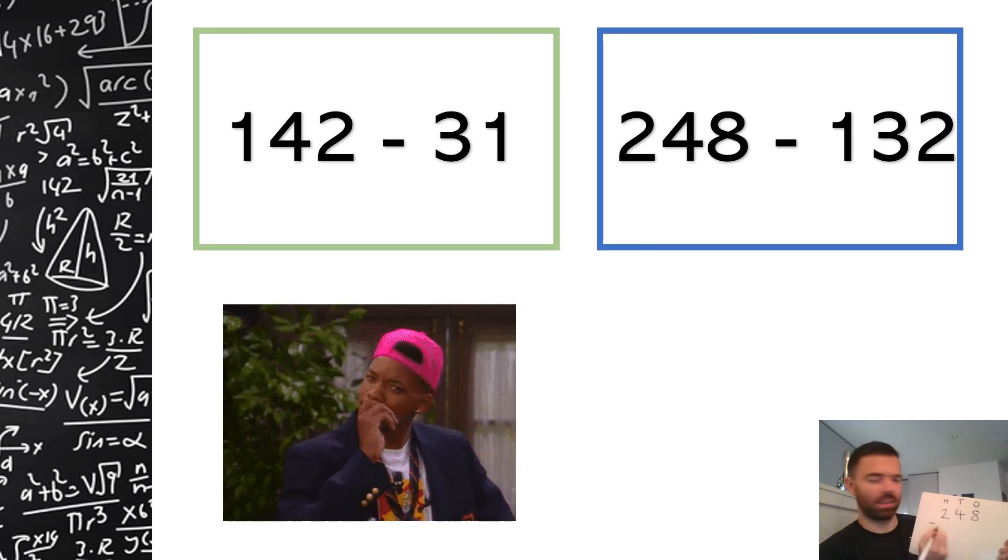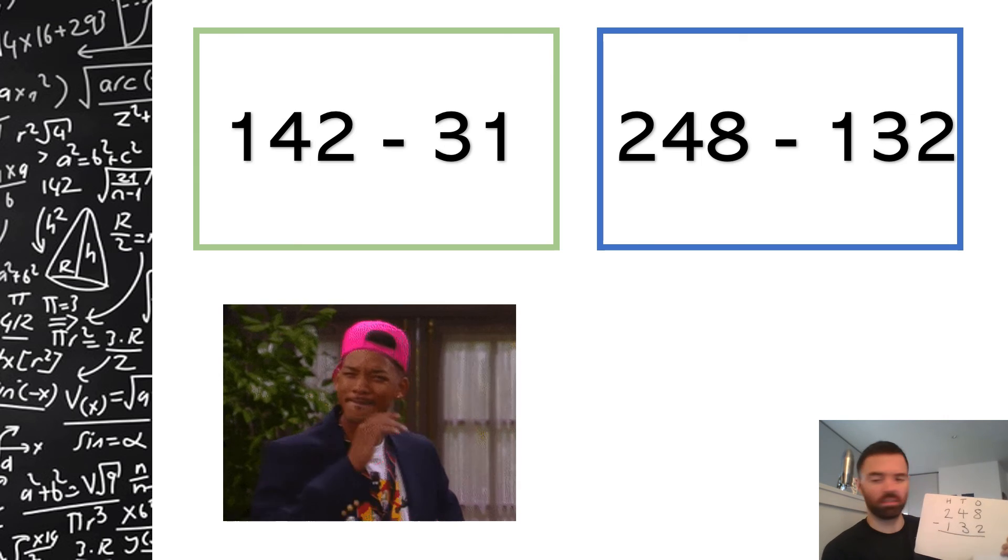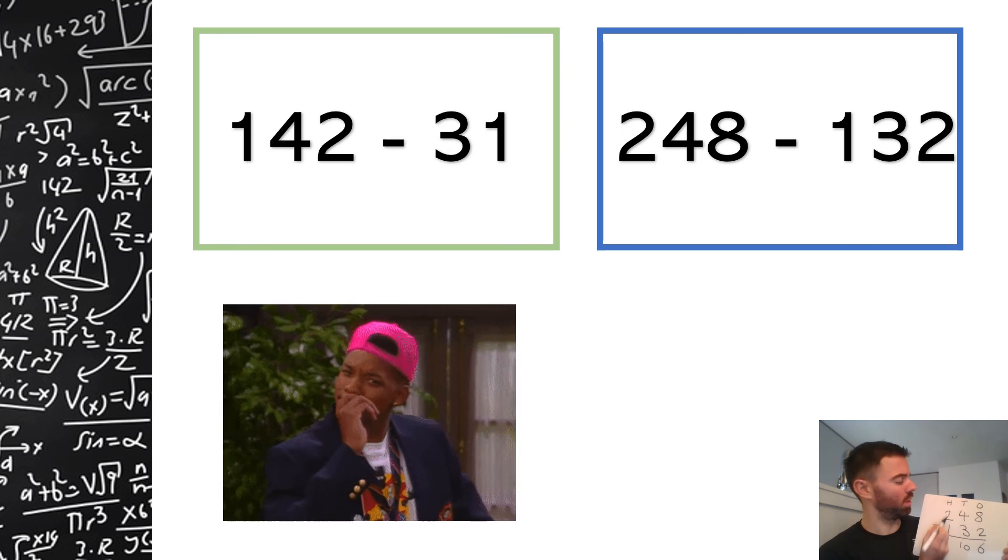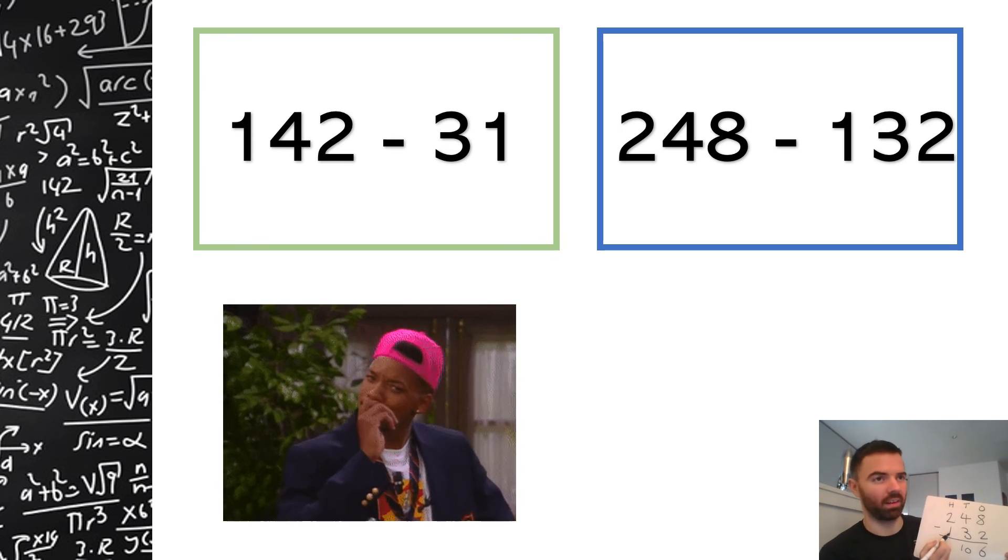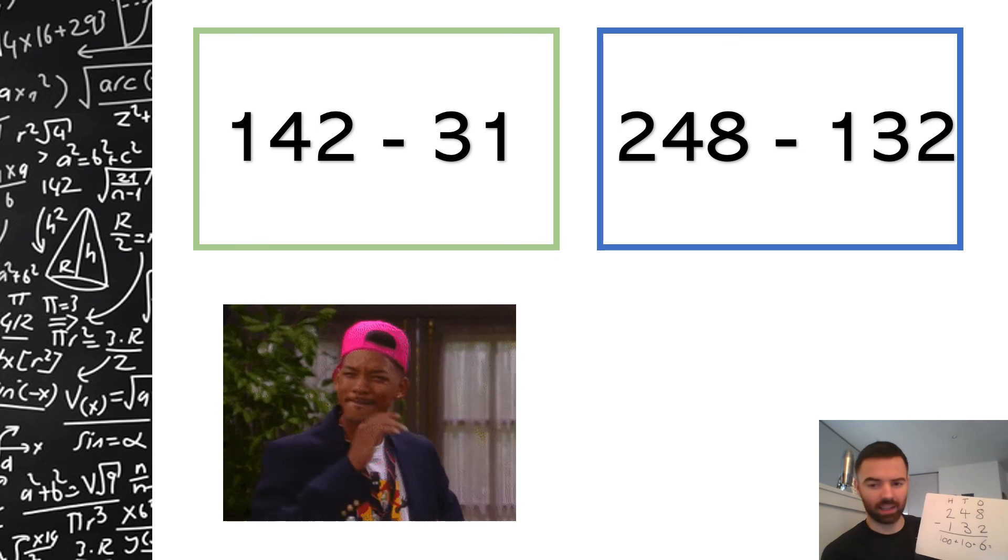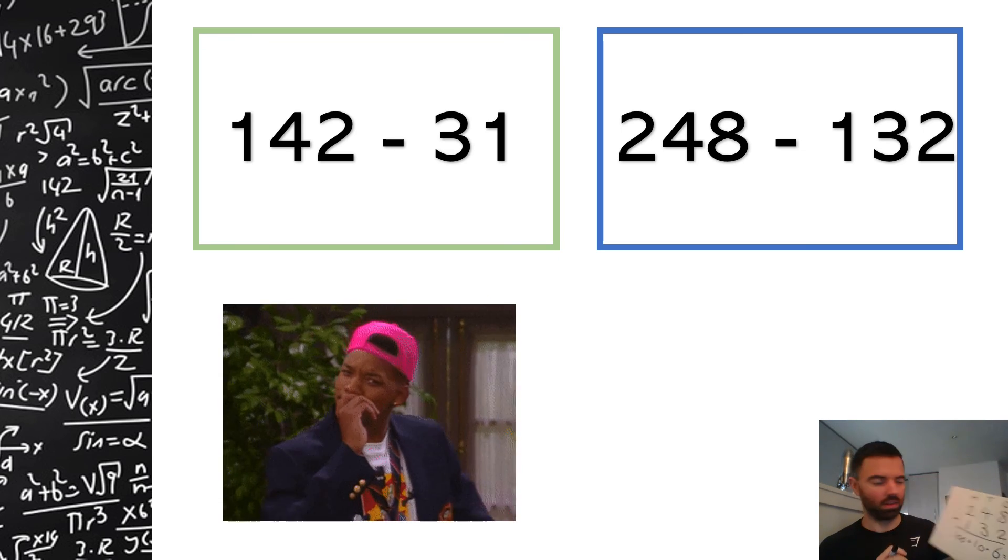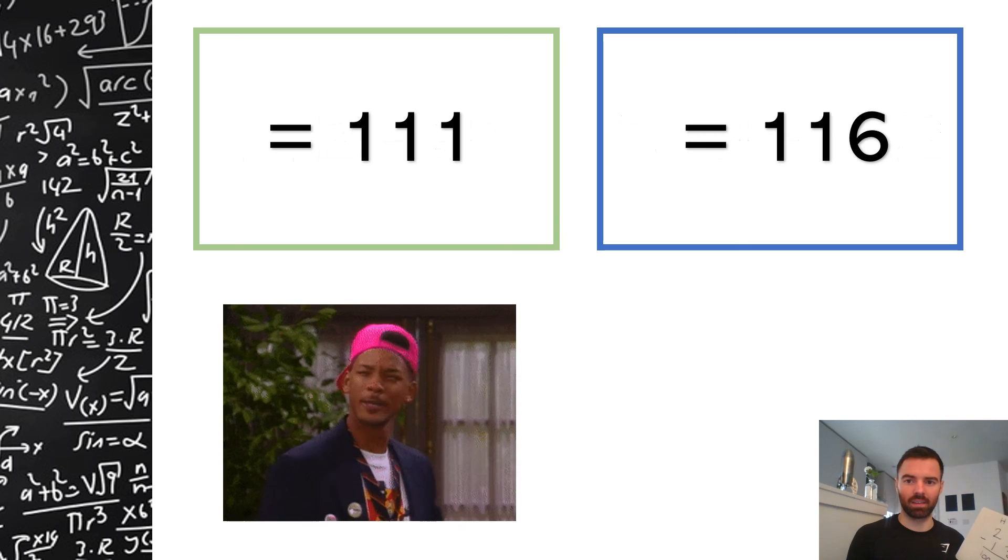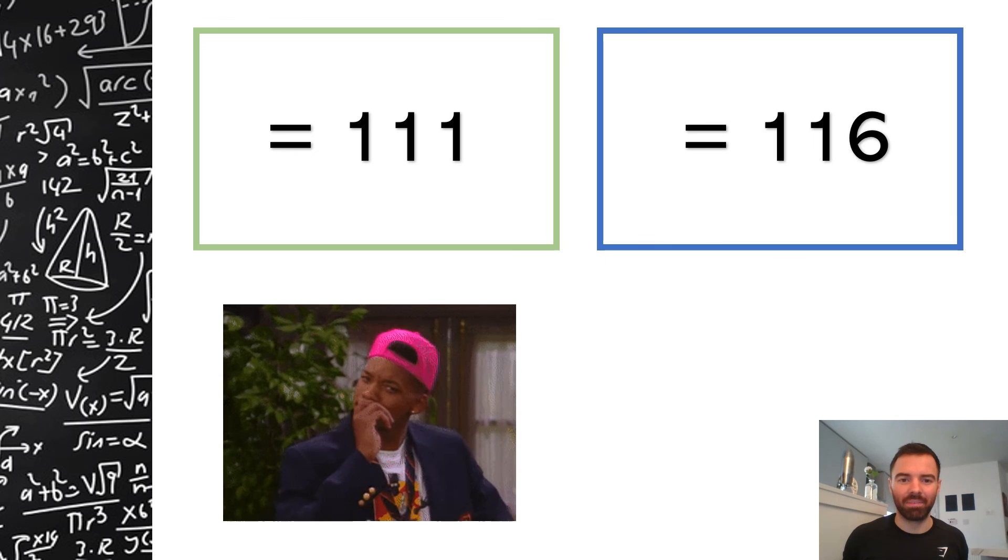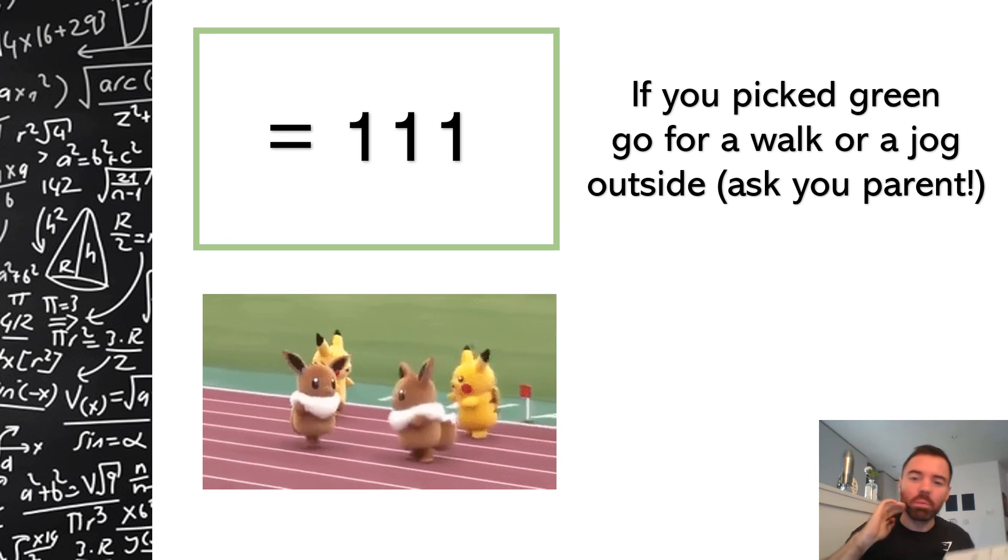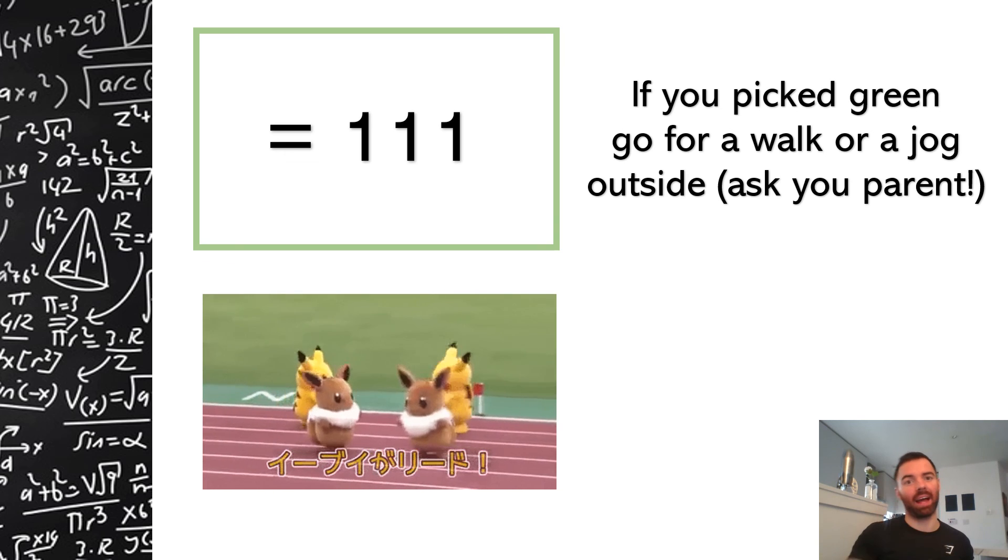This is how I'm laying it out. I'm doing vertical here. 8 take away 2 is 6, 40 take away 30 is 10, and the value of this, this would be 200. 200 take away 100 is 100. So add them all together. What do we get? 116. 116, I think. I think I'm right. Let's see, am I right?